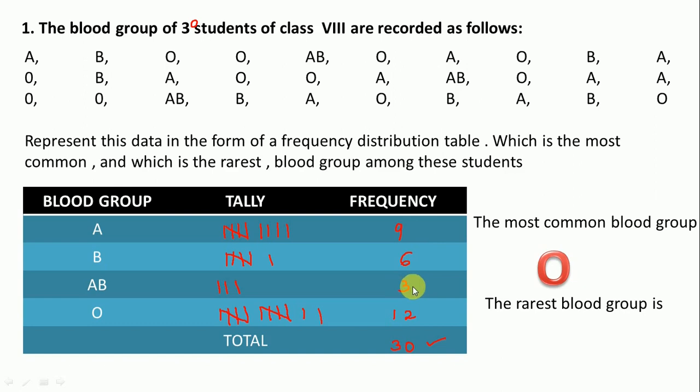That one is the rarest blood group. Here is 3, 3 is the lowest here, so this one is AB. So we can write here, AB is the rarest blood group. This is the question number one.